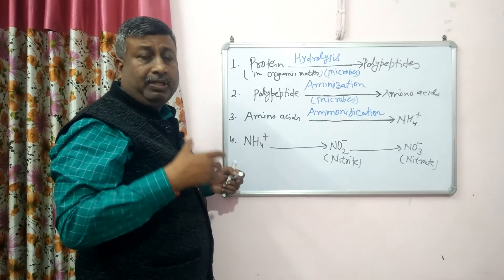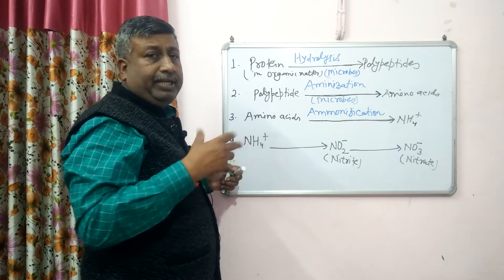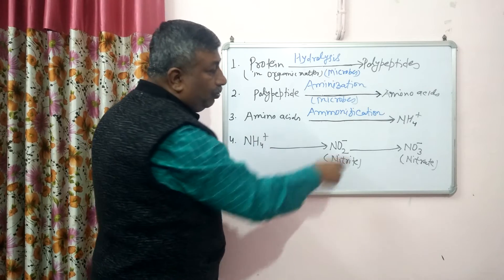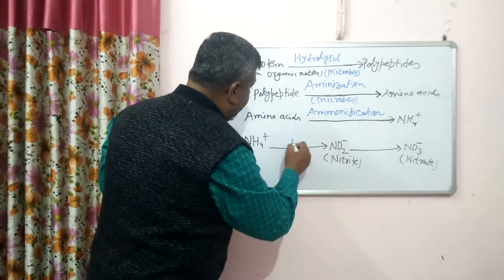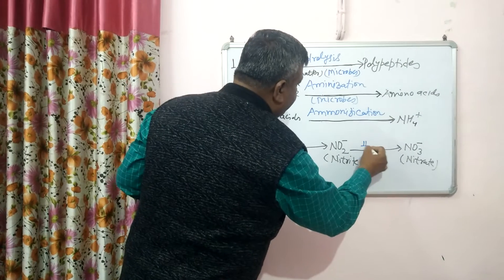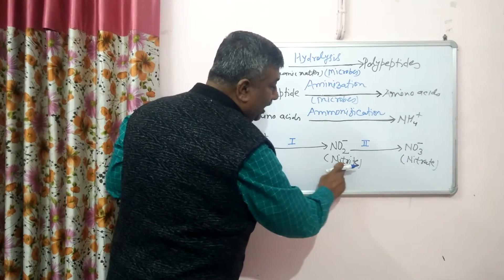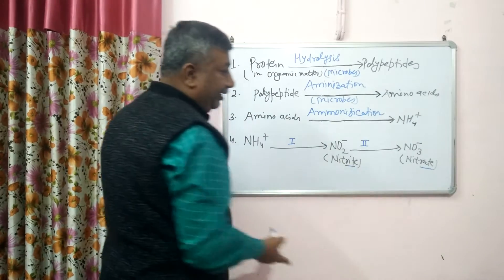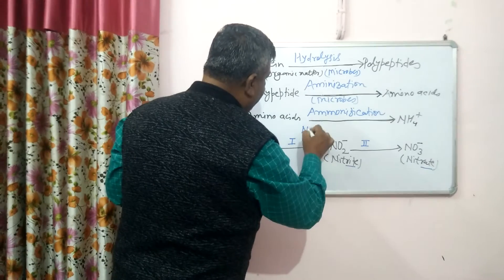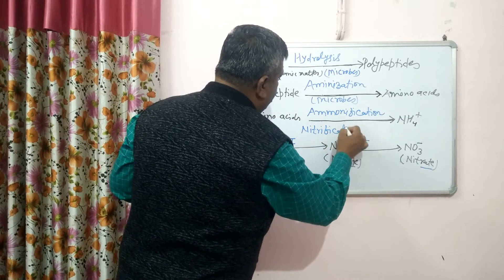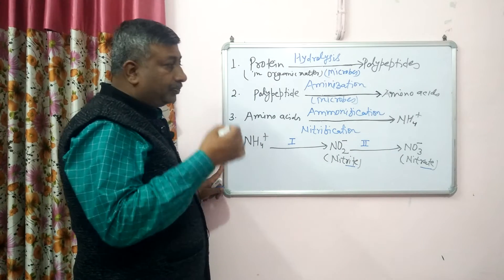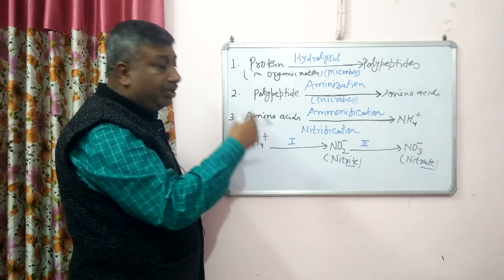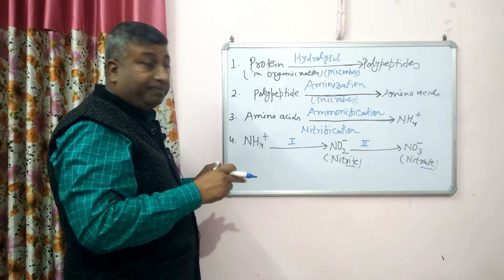Ammonium ion is present in the soil and is used by the plant and also by microbes. Then ammonium ion is converted first into nitrite (NO₂⁻), then into nitrate (NO₃⁻). This is a two-step process called nitrification. Nitrite (N-I-T-R-I-T-E) is NO₂, and nitrate (N-I-T-R-A-T-E) is NO₃. Since nitrites are toxic, they are rapidly converted into nitrate ion.